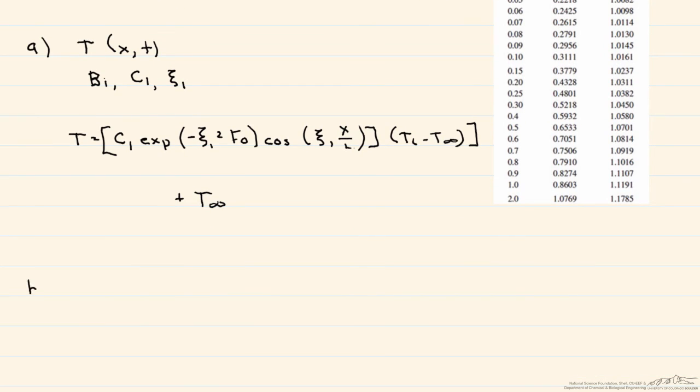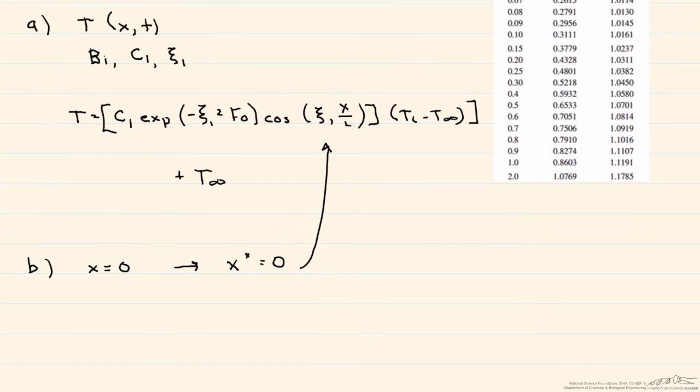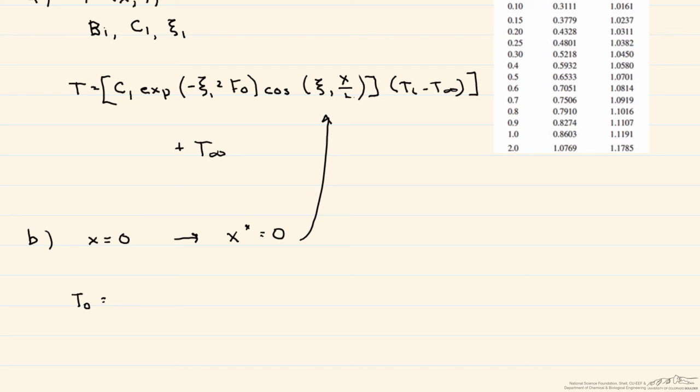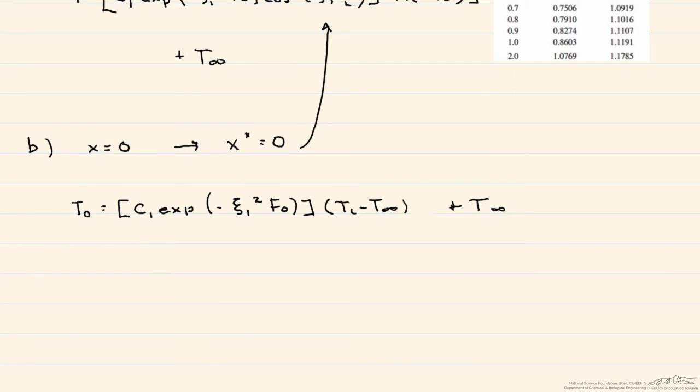Let's look at b. So now what you want to do is find the center line temperature. In other words, where x equals 0, and again remember the length of this plane wall is equal to 2L, so in the center x is going to equal 0. So we're going to use the same equation as we have before, however, because x equals 0, x star equals 0, and therefore this cosine term is going to end up equaling 1. So to find our temperature in the center, we just calculate it like this. In fact, we have a dimensionless form of this equation just for the center line temperature.